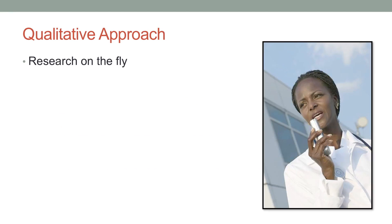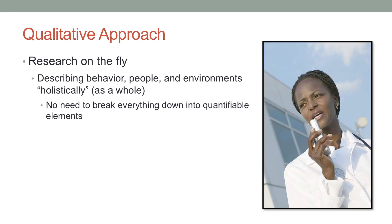One of the benefits of qualitative research is you get to sort of make it up as you go along, and as you find new things that you become interested in, you can suddenly change course and start studying that. Often, when you're describing behavior, people, and environments just using words, you can do so holistically as a whole. You don't have to zero in on one single component. And you can find more complex interactions — for example, nurses in particular high-stress departments were most likely to be aggressive towards co-workers, which is the kind of complex interaction scientists might not know to look for unless they start asking people.